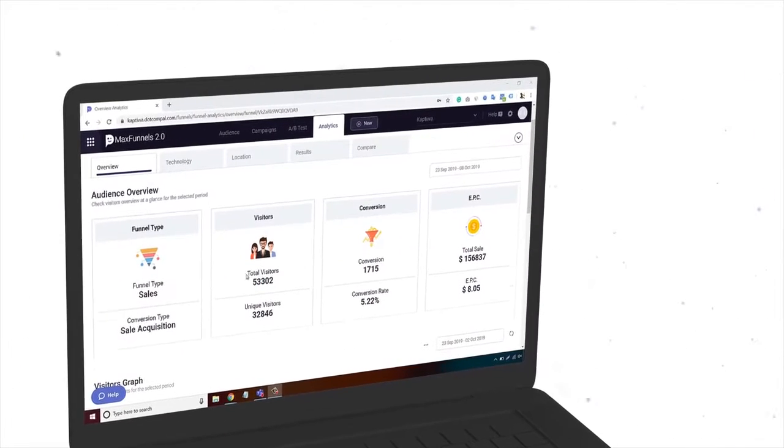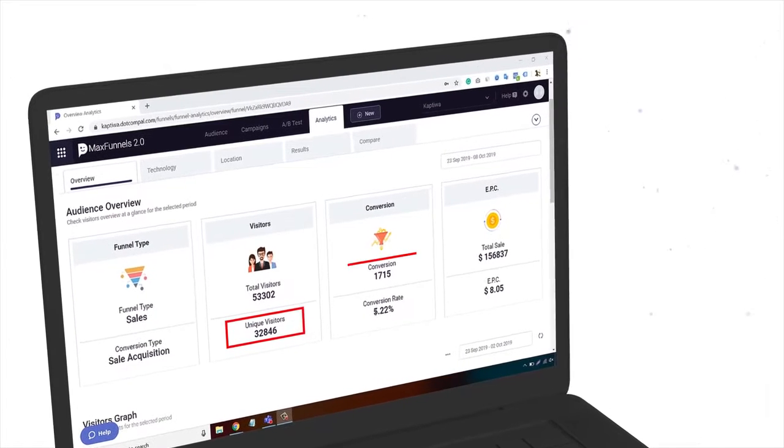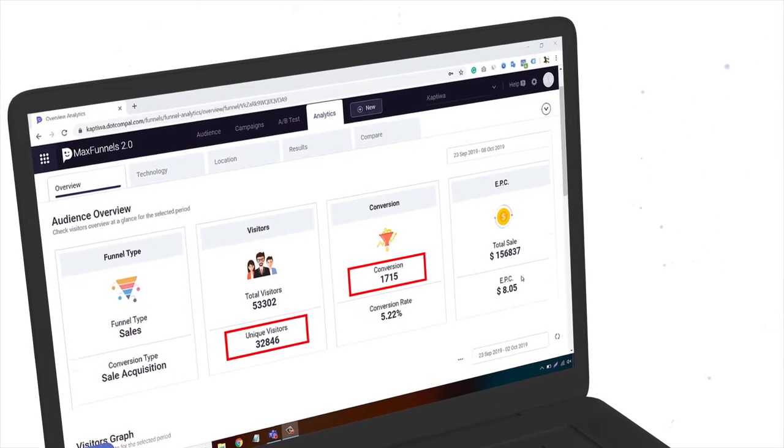Here is the one exact funnel that got more than 32,000 visitors with 1,715 conversions and a total of $156,837 in sales for a software product by Dr. Amit Parikh. Check out the page.